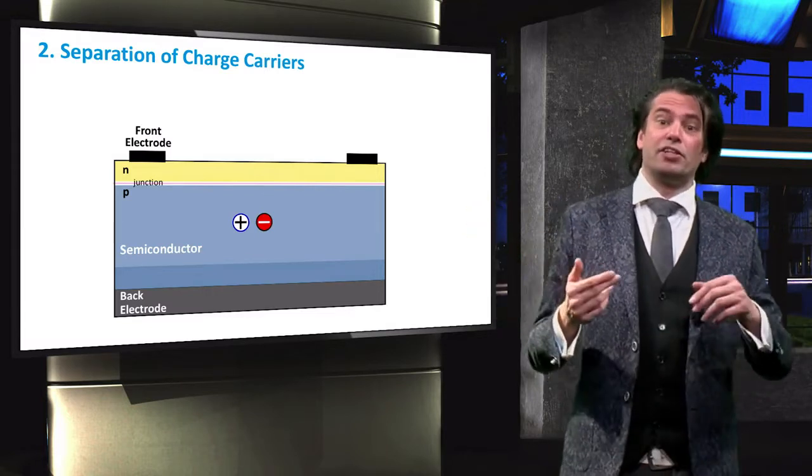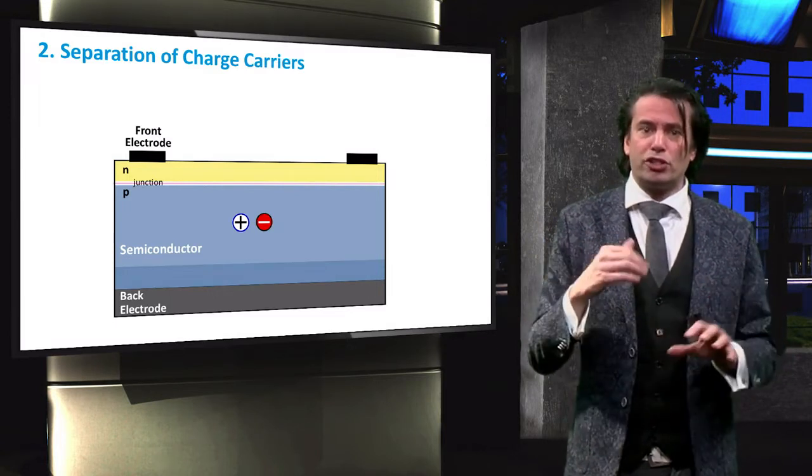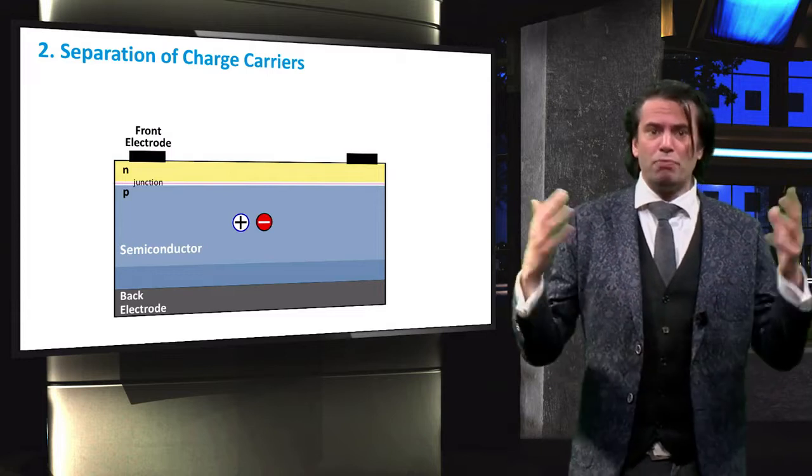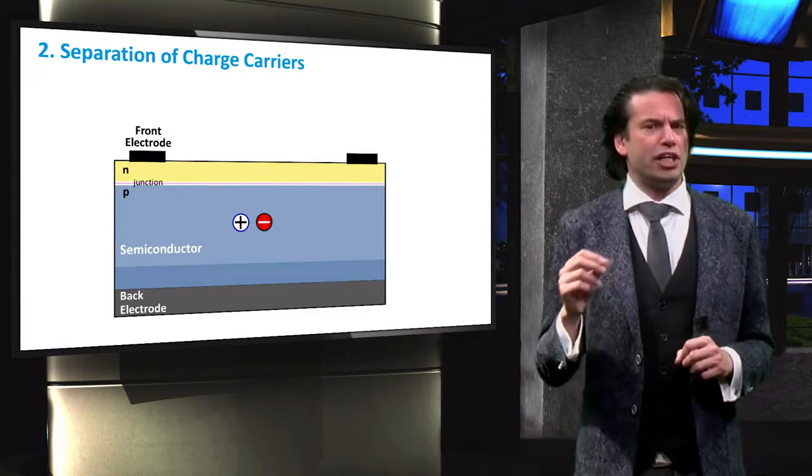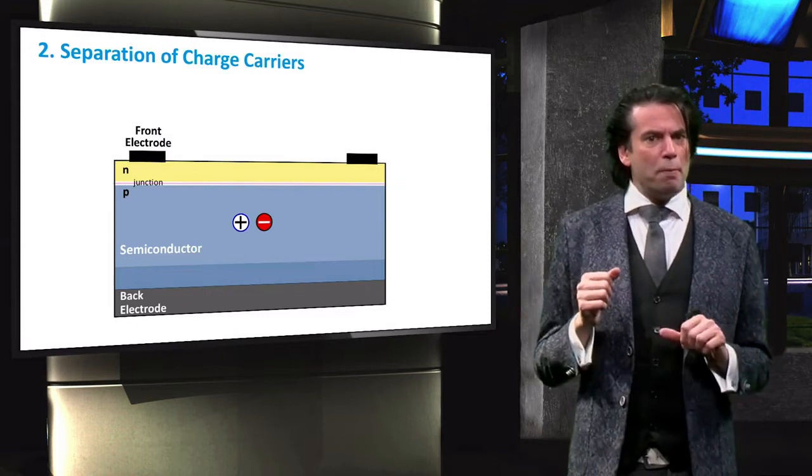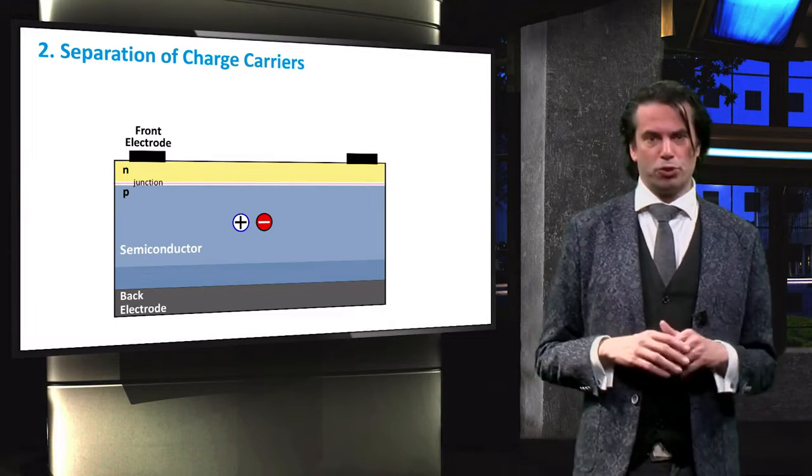Once carriers are generated in a solar cell, they will move around due to various processes such as diffusion, random motion and drift. In order to separate the photo-generated charge carriers, semi-permeable membranes must be present on both sides of the absorber.